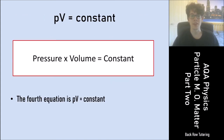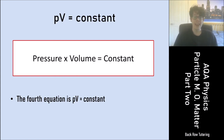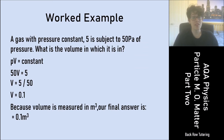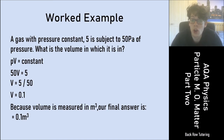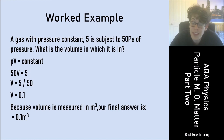The equation is PV = constant: pressure times volume equals a constant. Every gas has its own constant, and if you adjust the pressure or volume, the other adjusts to keep the constant the same. Worked example: a gas with pressure constant 5 is subject to 50 pascals of pressure. What is the volume? PV = constant, so 50 × V = 5, rearranging gives V = 5 ÷ 50 = 0.1. The final answer is 0.1 metres cubed.